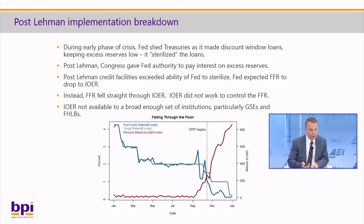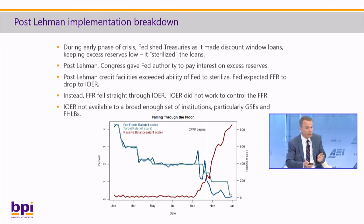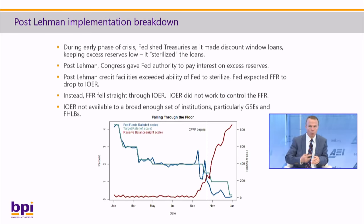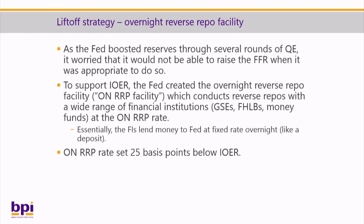After Lehman, Congress gave the Fed the authority to pay interest on reserves, and after Lehman the Fed's credit facilities expanded and the Fed was no longer able to sterilize those reserves — the supply of reserves went up. The Fed had expected the federal funds rate to go down to IOER but no lower, because why should banks lend money to each other at a rate lower than what they can earn by leaving funds on deposit at the Fed? But instead — and it's important to remember that when Lehman happened the FOMC's target was noticeably above zero — the federal funds rate fell right below IOER. IOER did not work to control the federal funds rate, and the Fed concluded that IOER was not available for a broad enough set of institutions, particularly GSEs and FHLBs that have accounts at the Fed but don't earn IOER.